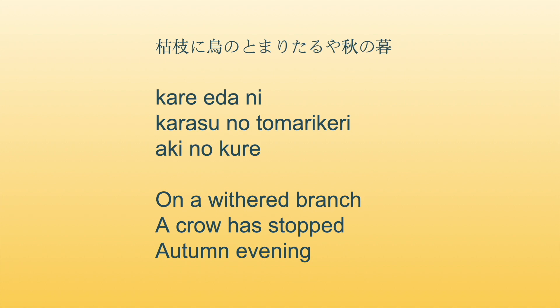As with most haiku, the reader must participate in the creation of meaning. We see this gap after the second line, and that's where the reader must piece things together. The branch in the first line and the crow in the second line are linked by action, but the third line is quite different, opening the poem to further consideration and interpretation. Noticing the cuts can help us see where the reader is invited into these poems.